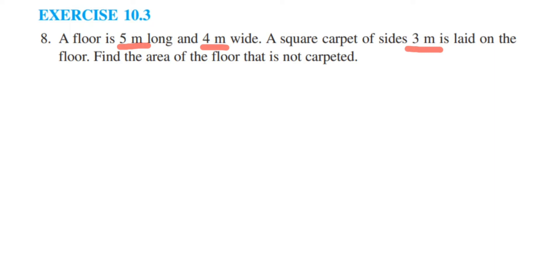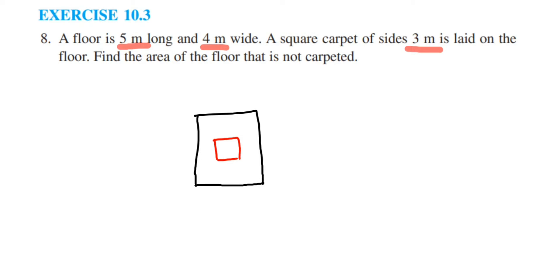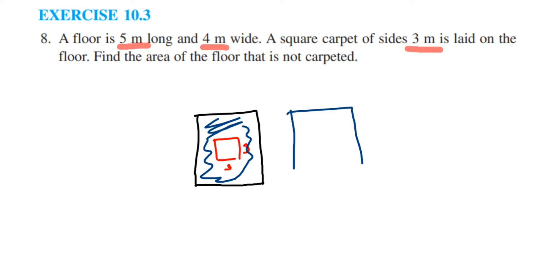We have to find out the area of the floor where the carpet is not present. Suppose this is a floor in the shape of a rectangle, because length and breadth are given. There is a carpet of a square shape, which could be at the center or somewhere else, with side 3 meters. We will first find the area of the whole floor, then subtract the area of the carpet to get the remaining uncarpeted area.